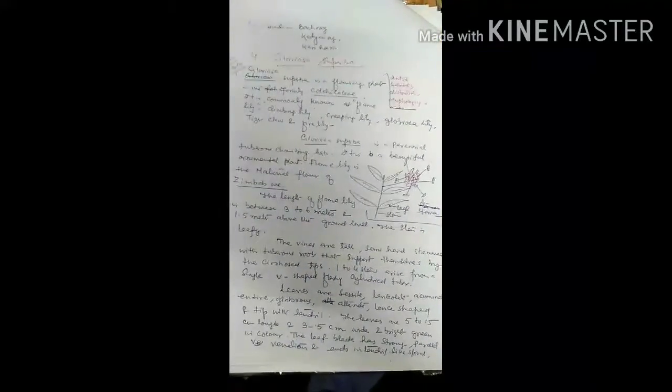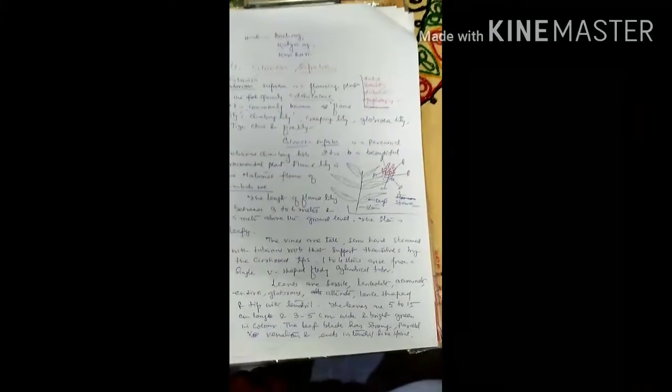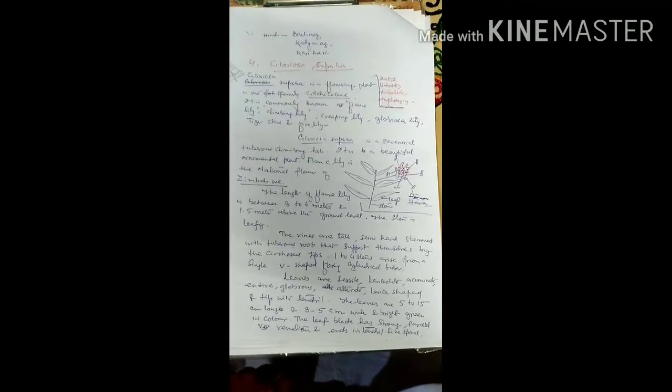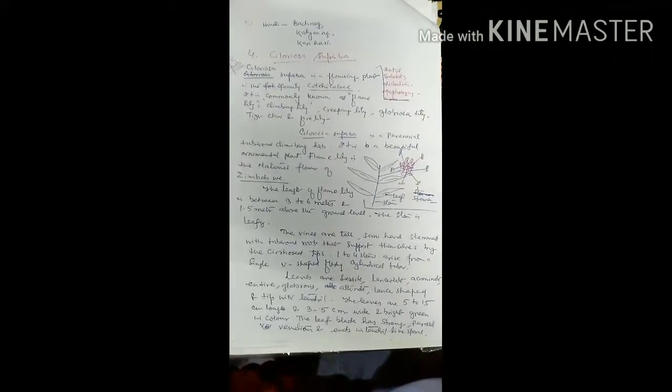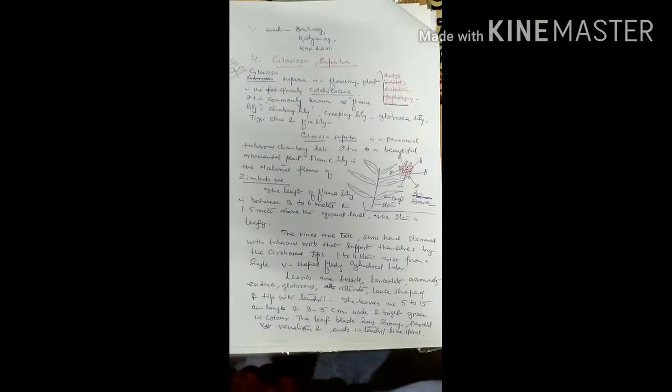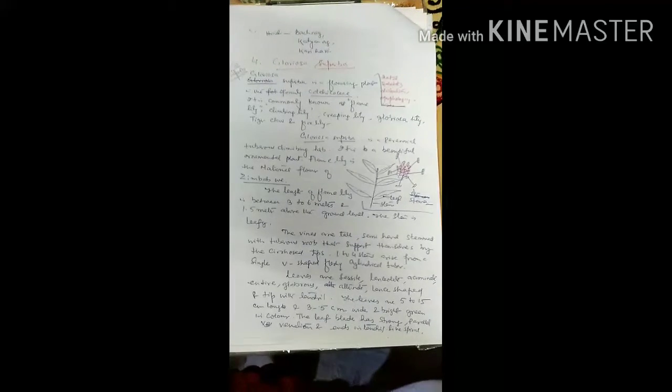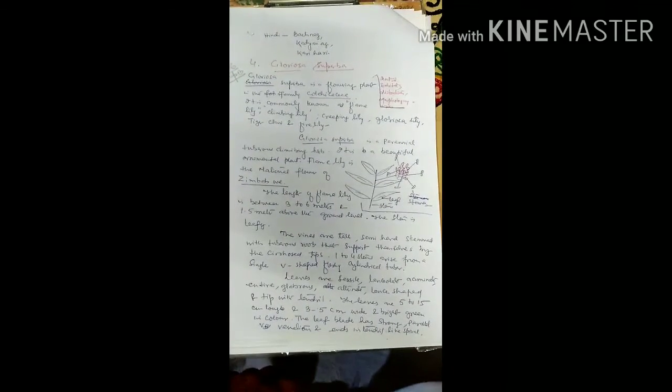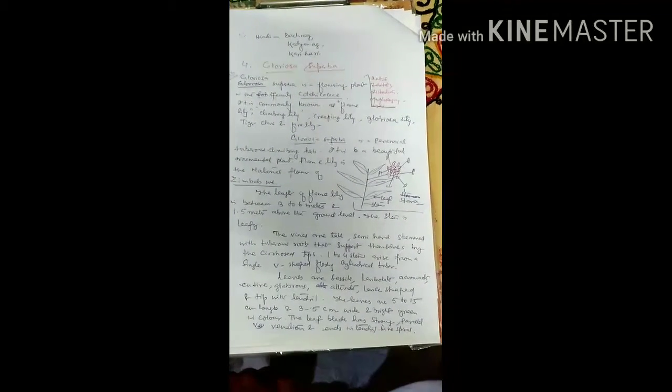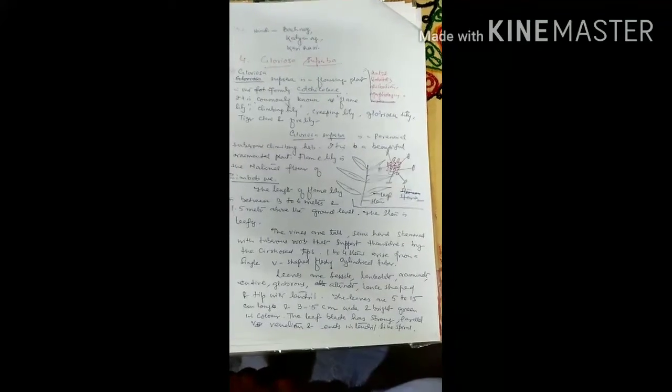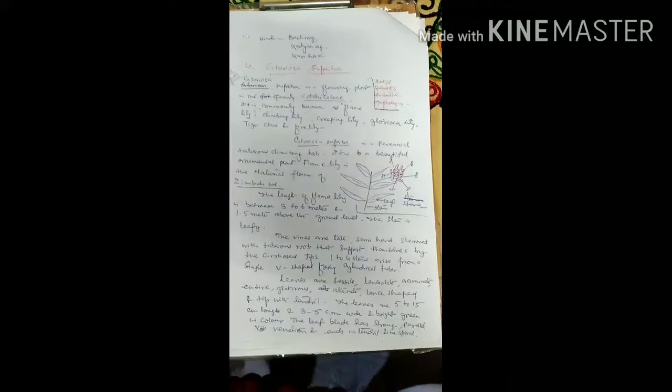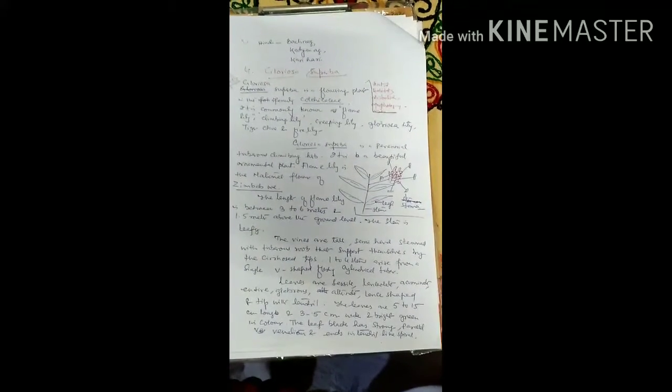The stem is leafy. The vines are tall, semi-hard, stemmed with herbaceous tuberous roots that support themselves by the coiled tip. 1 to 4 stems arise from the single V-shaped fleshy cylindrical tuber. Leaves are sessile and ciliate, acuminate, entire, glabrous, alternate, lance-shaped tip with tendril.